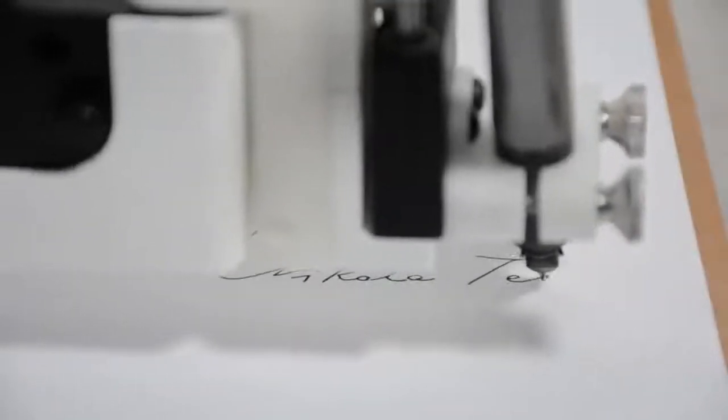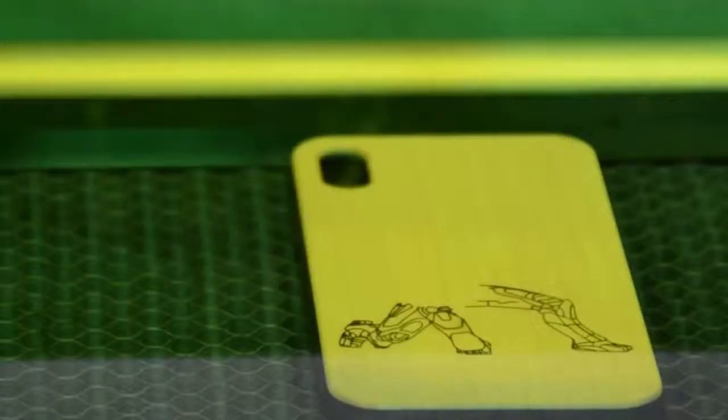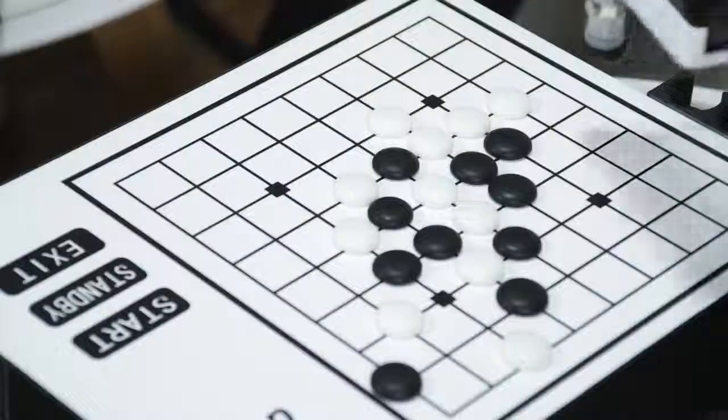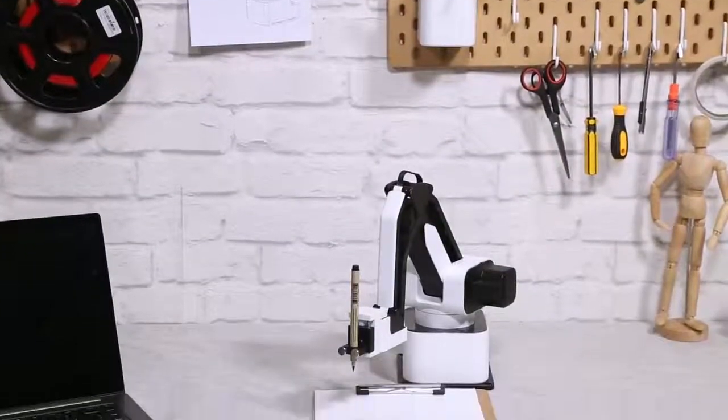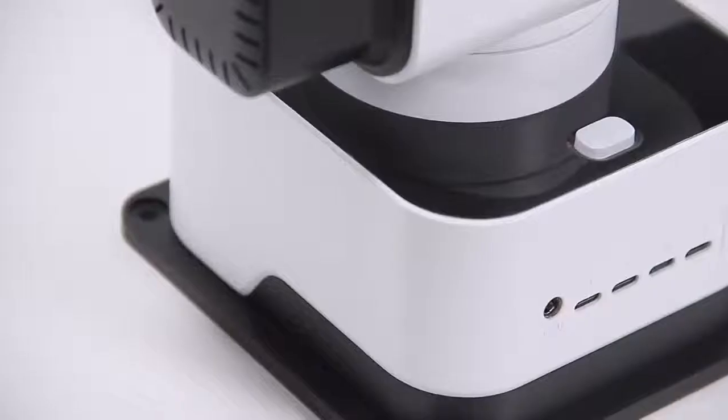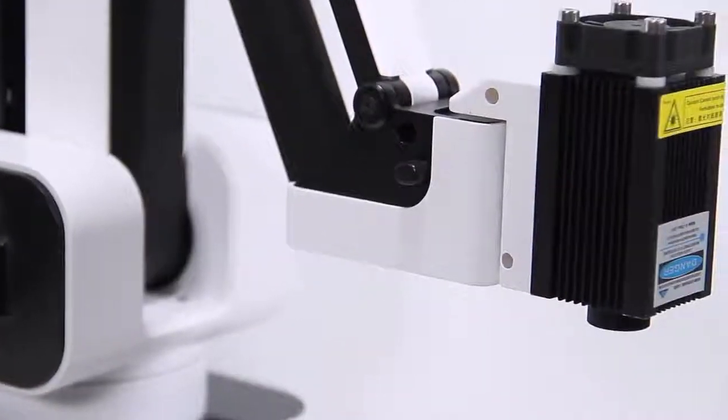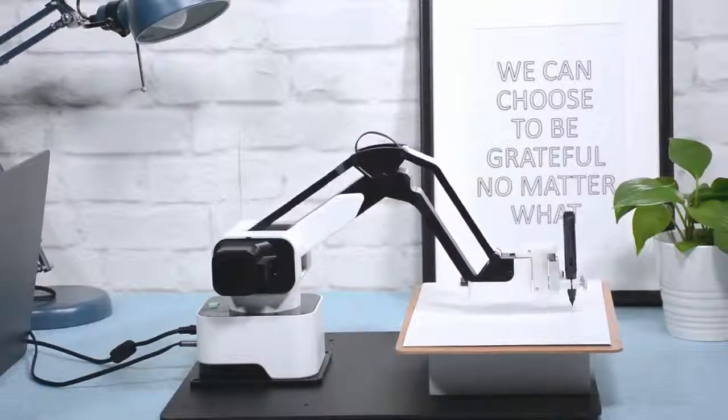Imagine having Iron Man's Jarvis on your desktop that writes your letters, draws your pictures, laser engraves your phone case and plays chess with you. Today it all becomes possible with Hexbot, the first versatile all-in-one desktop robotic arm that turns your desktop into a workshop.